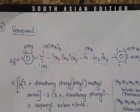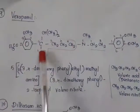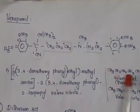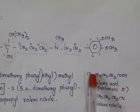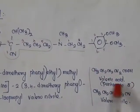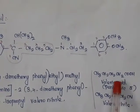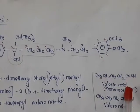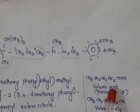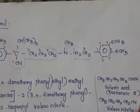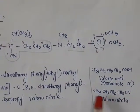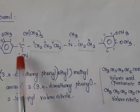Now we will see the structure of verapamil. This would be taken as the parent. Before that, we have known the pentanoic acid structure. A 5-carbon acid is called pentanoic acid, otherwise called valeric acid. And instead of carboxylic acid, here we have cyanide — that is nitrile — which can be called valeronitrile. So here we have chosen valeronitrile as the parent.